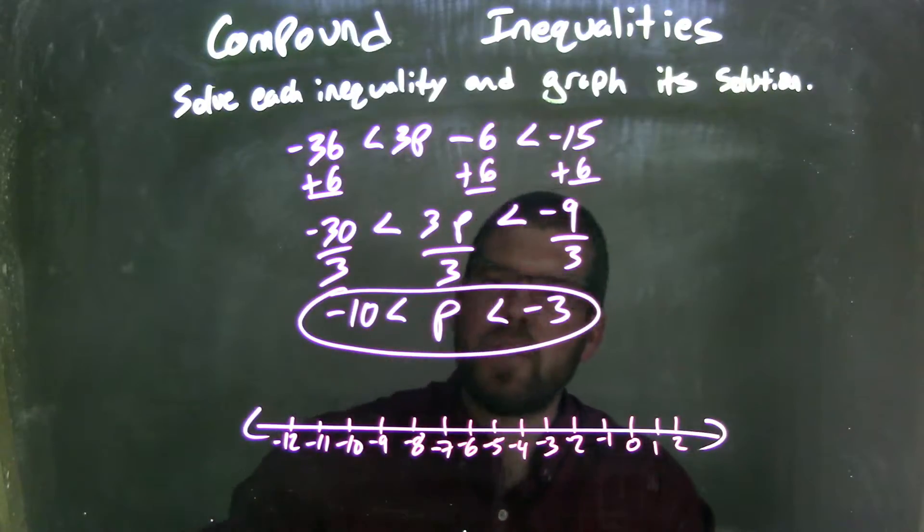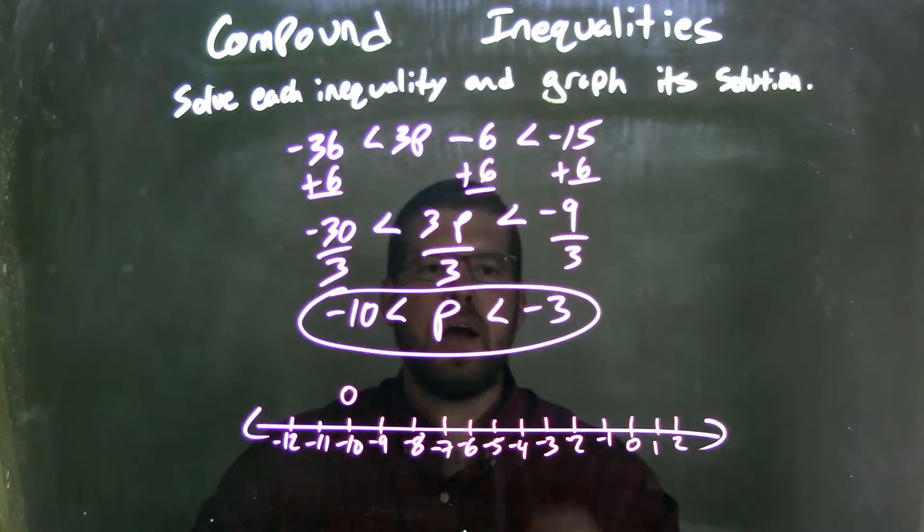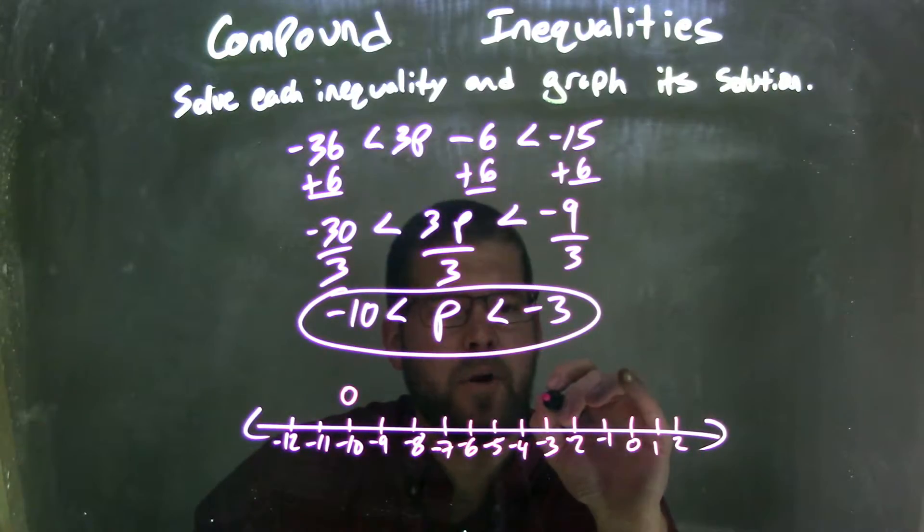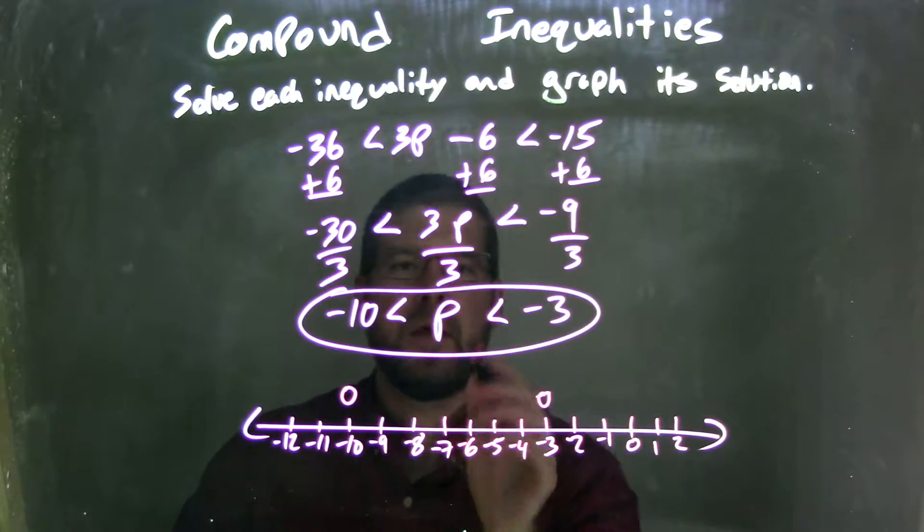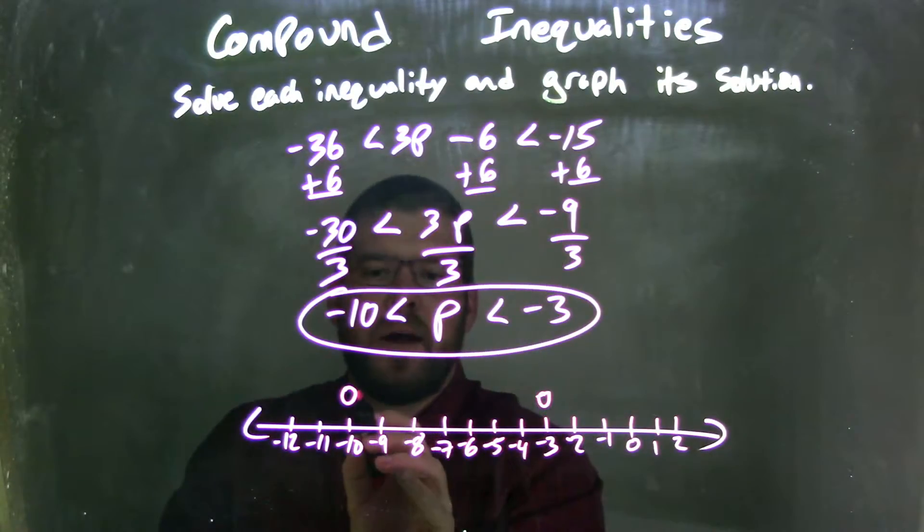Well, since negative 10 is less than p, it's not equal to p, I have an open circle at negative 10. Then at negative 3, p cannot equal negative 3, so I'm going to have an open circle at negative 3. But p exists in between negative 10 and negative 3.